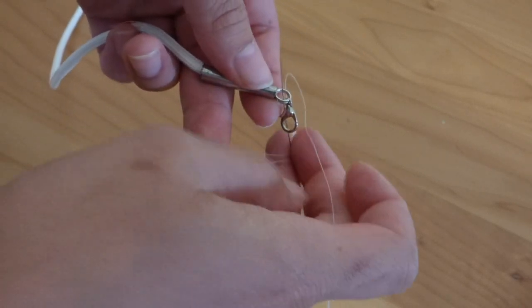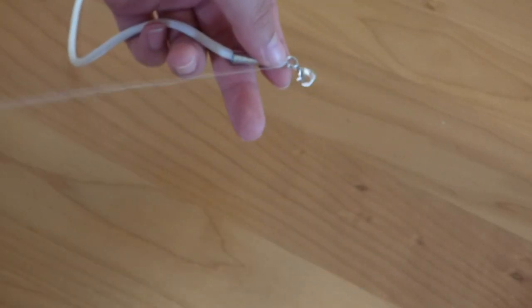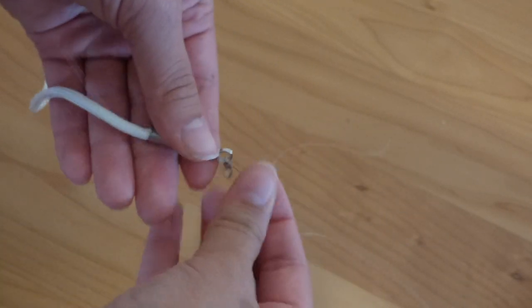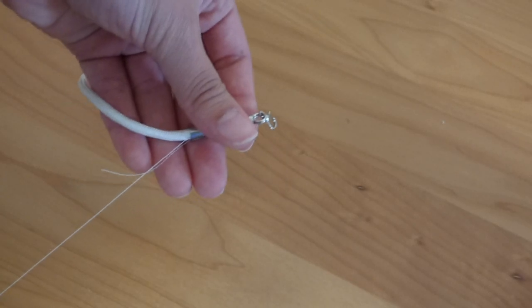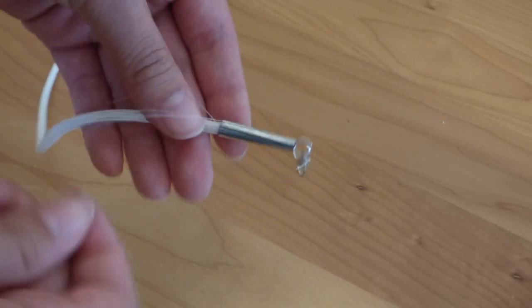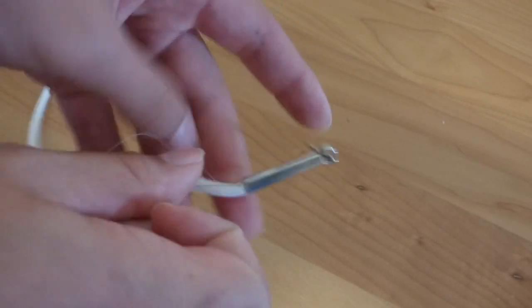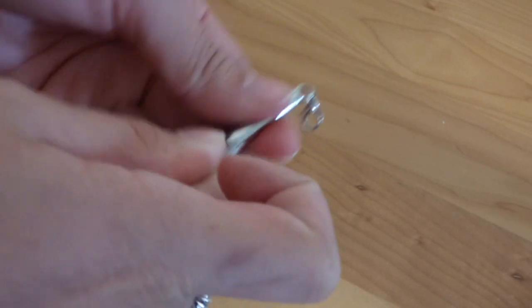Then stick that needle back through the split ring and right back down through the cone. And I'm going to repeat that one more time. So I'm going to stick my needle in my paracord and up my cone.